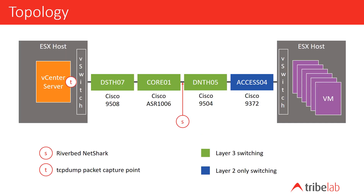The first thing to do is to look at the topology of the system. We have a vCenter server on the left-hand side of this diagram, running in a Windows host under ESX. That's talking across the network to a number of ESX hosts all over the data center — vCenter manages ESX hosts. There's a connection from the vCenter server acting as a client out to an agent on each ESX host, and that agent runs on port 443.